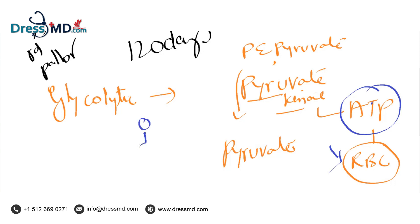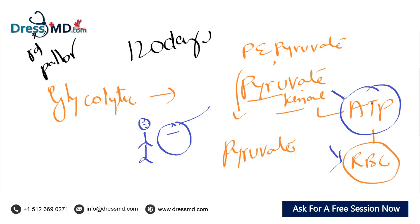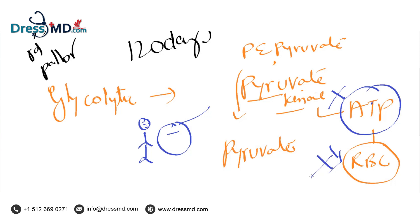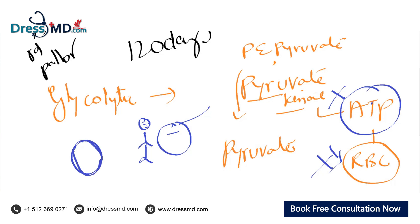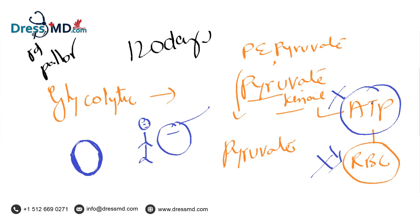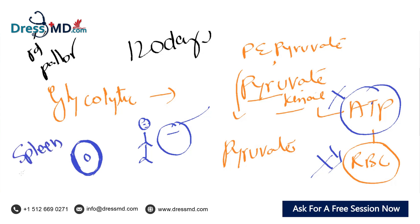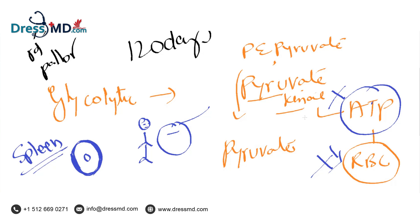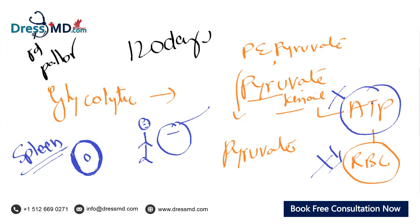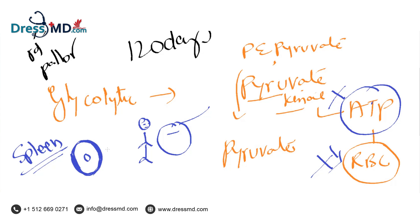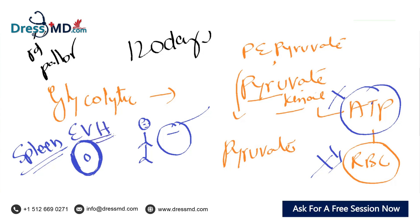In a patient who does not have the pyruvate kinase enzyme, ATP cannot be generated and RBCs cannot utilize energy. As a result, RBCs become rigid and are destroyed by the reticuloendothelial cells of the spleen — this is called extravascular hemolysis. So when pyruvate kinase is absent, RBCs become rigid and are taken up by the spleen, causing extravascular hemolysis.